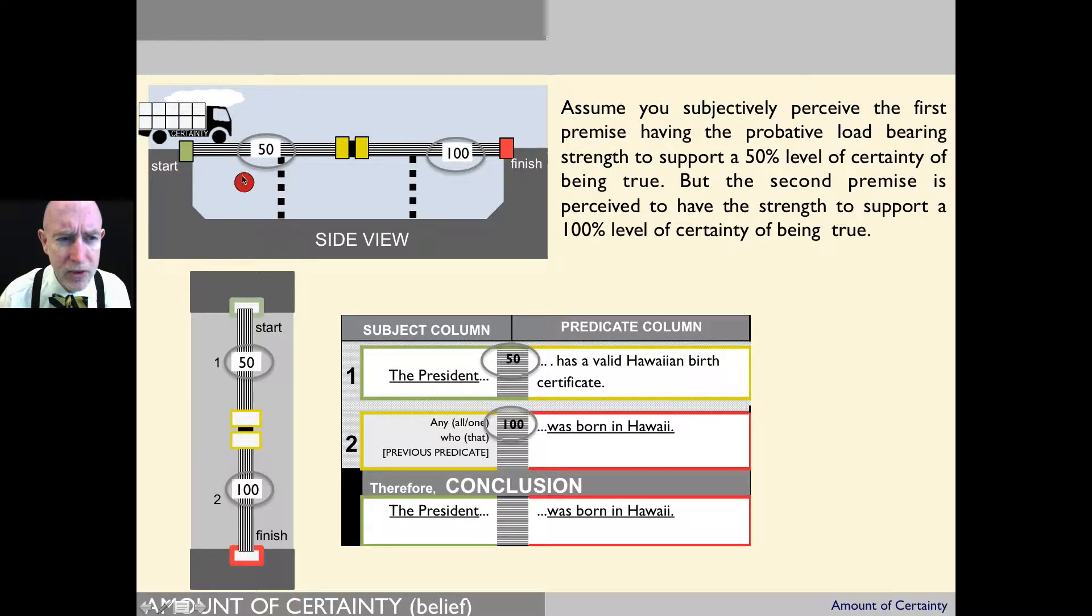So this means that when you look at this argument and you examine the first premise, your subjective assessment is that this has a 50% likelihood of being true in your eyes.